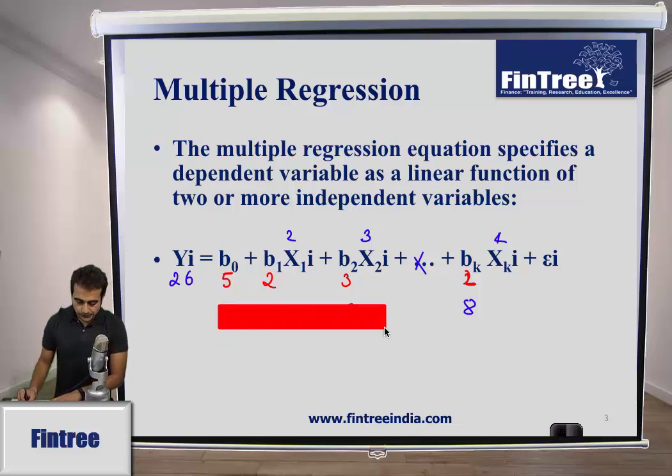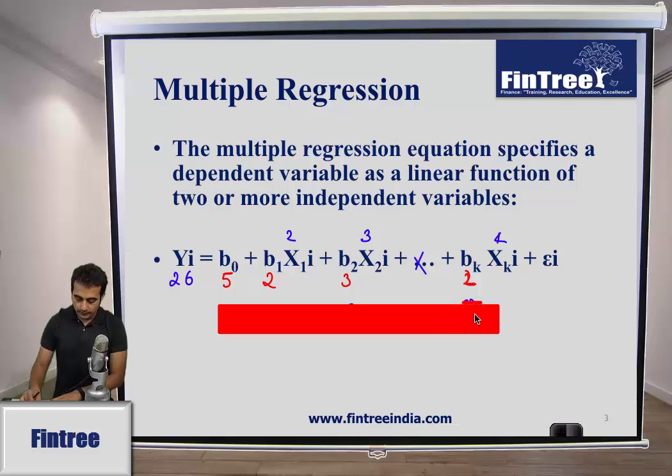Now, let us assume that everything else is constant but instead of 2 now it becomes 3. Everything else remains constant, instead of 2 it becomes 3. Now what will happen is your y value will become 28. So the interpretation of this B1 is that if everything else is kept constant and if the x value changes by 1, then the y value will change by 2.